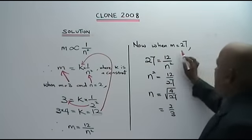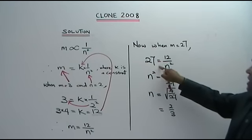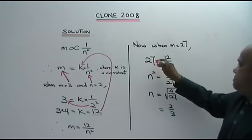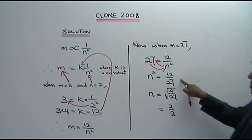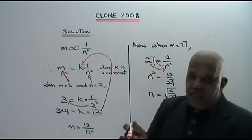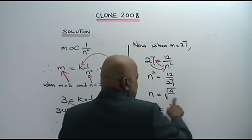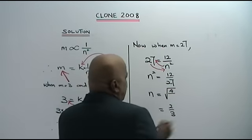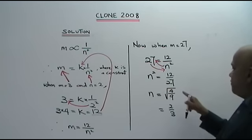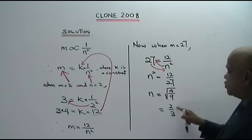Now when M equals to 27, we substitute M is 27. 27 equals to 12 over N squared. Bring this up, bring this down. So this is what you get. N squared equals to 12 over 27. Cancel by 3. You get 4 over 9. N is equal to square root of 4 over 9, and what is square root of 4 over 9? 2 over 3.